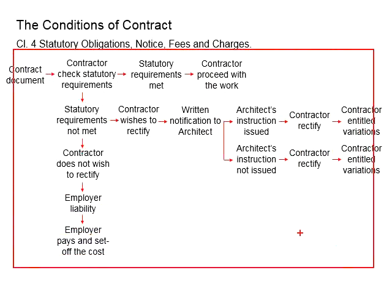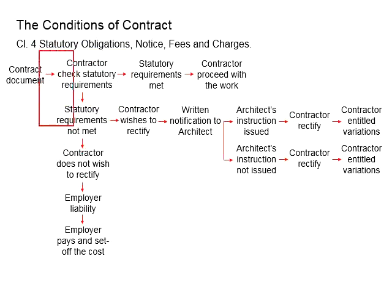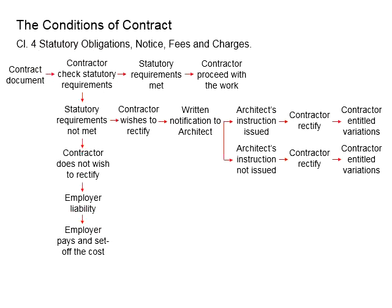This flowchart applies when the contractor is vigilant regarding statutory requirements and actually checks the contract document against legal requirements. In the case that the contractor is not aware of those legal requirements, the flowchart follows a different path where the liability still falls on the employer, who pays the penalty cost, and then sets off the cost from the contractor. It is the obligation of the contractor to be aware of statutory requirements, as negligence and ignorance will lead to monetary implications for the contractor.